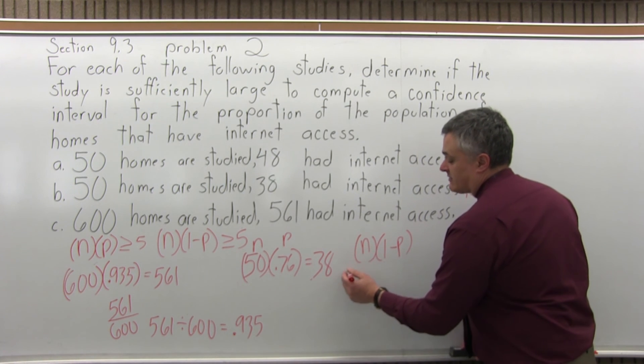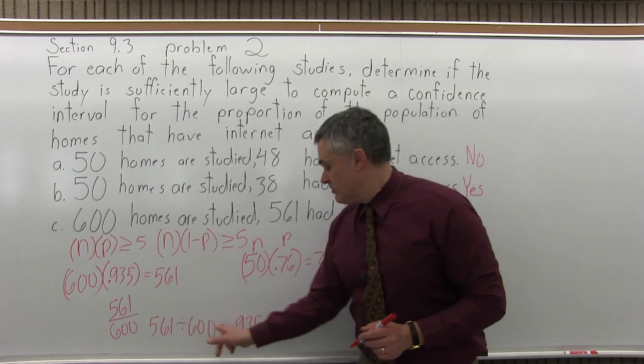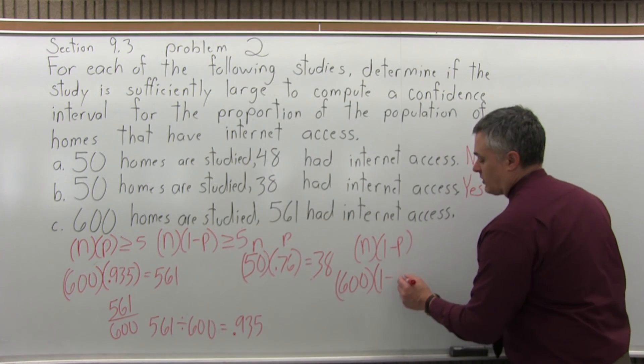So, the n, again, the size of my sample is 600 times 1 minus p. The value for p came out to .935 from dividing the 561 over 600. So, 1 minus .935, that's 1 minus p.